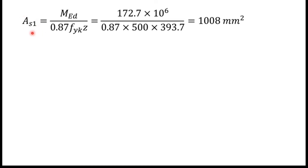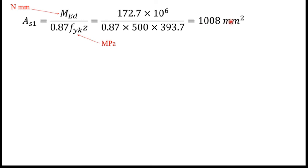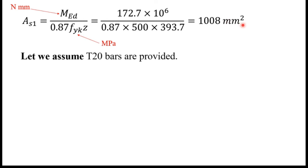The required reinforcement area AS1 is given by AS1 = MED / (0.87·FYK·Z), where MED is in Newton millimeters and FYK is in megapascals. Substituting those values and simplifying, we get AS1 = 1008 square millimeters.